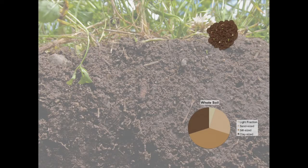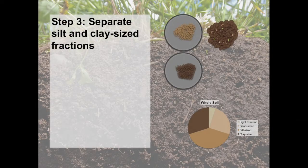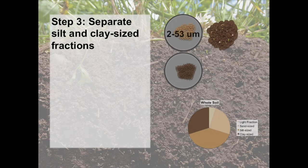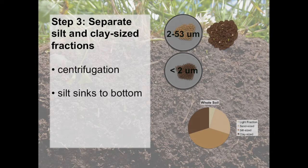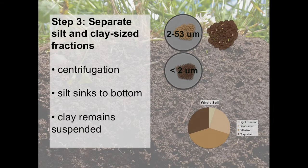Now that we are left with silt and clay-sized material, our final step is to separate the two. This is another separation by size, as silt-sized material is defined as anything between 2 and 53 micrometers, while clay-sized material is anything smaller than 2 micrometers. Rather than sieving, we will use centrifugation this time. Since silt is larger, it will be pulled to the bottom during centrifugation, while clay will remain suspended. We can then aspirate the clay just like we aspirated the light fraction.